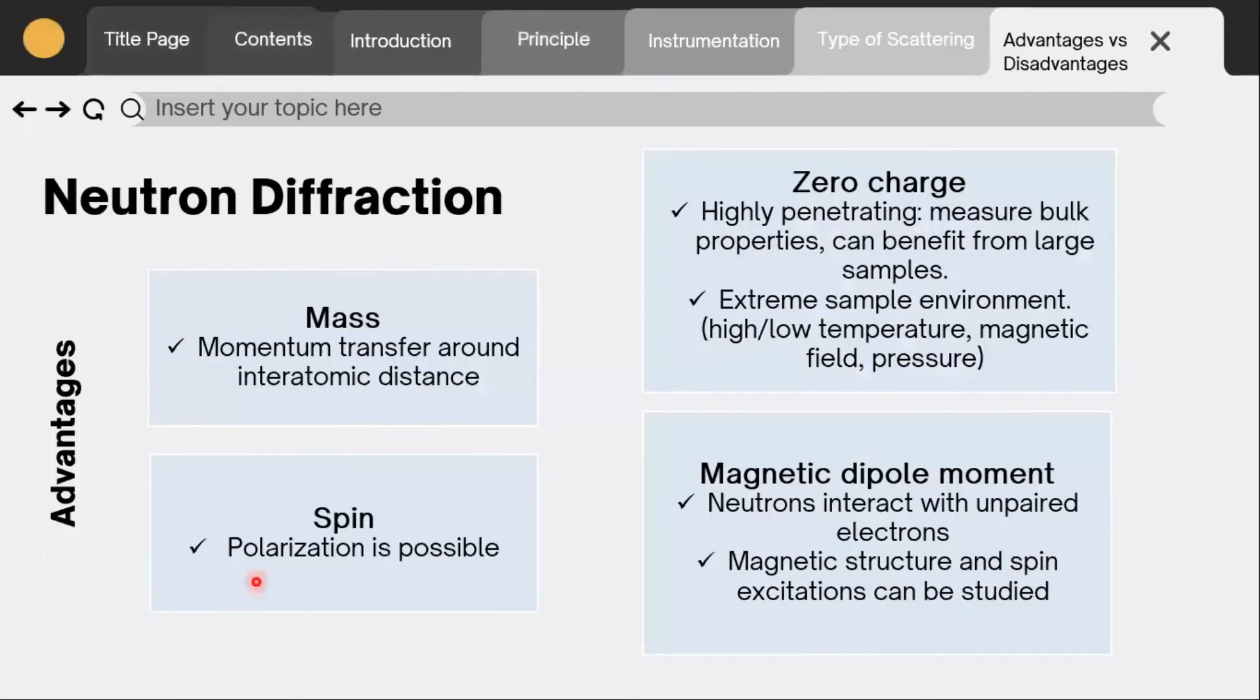These are some of the advantages of neutron diffraction. The first one is mass: neutron momentum transfer around interatomic distances. The second one is spin: polarization of neutrons is possible. Zero charge: highly penetrating. Neutrons can measure bulk properties and also benefit from large samples.